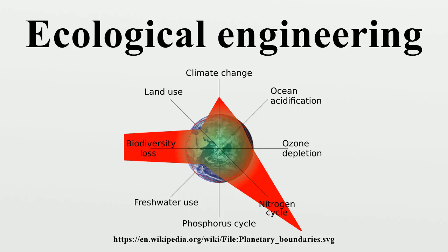Ecological engineering was introduced by Howard Odum and others as utilizing natural energy sources as the predominant input to manipulate and control environmental systems. Mission Jürgensen wrote that ecological engineering is designing societal services such that they benefit society and nature, and later noted the design should be systems-based, sustainable, and integrate society with its natural environment.